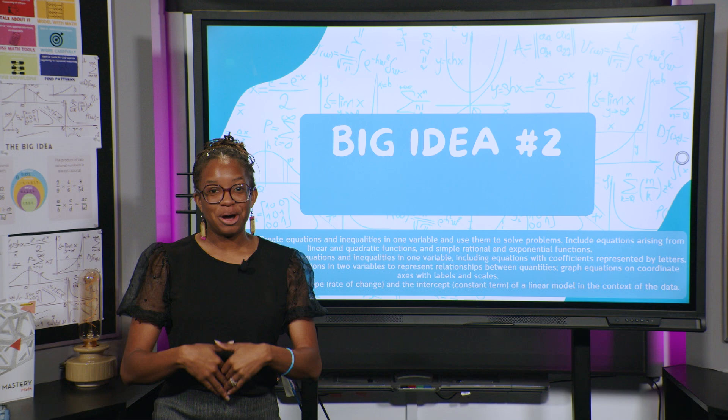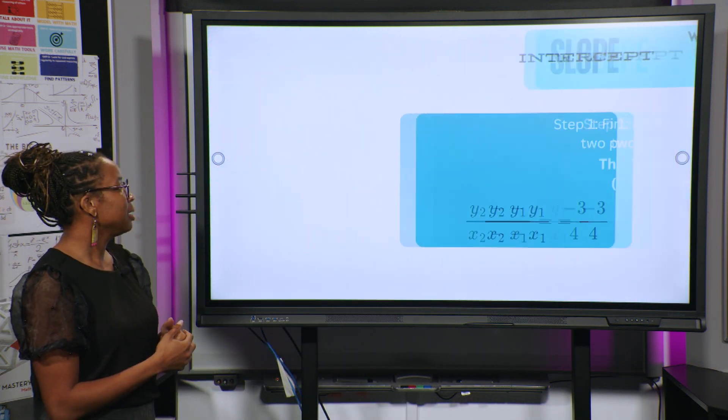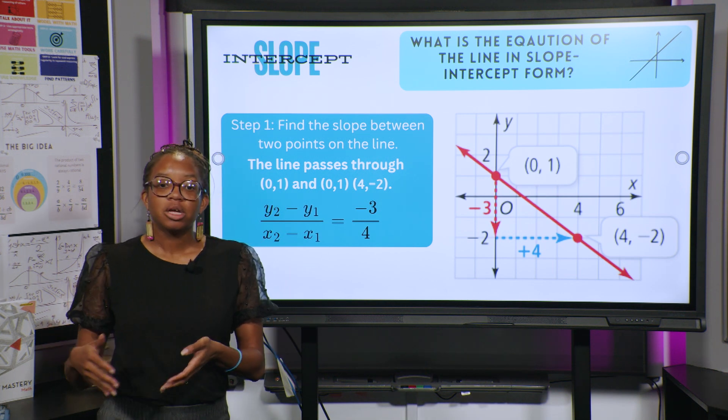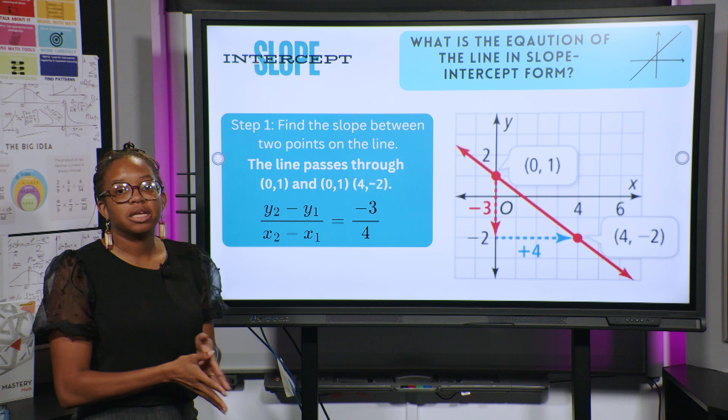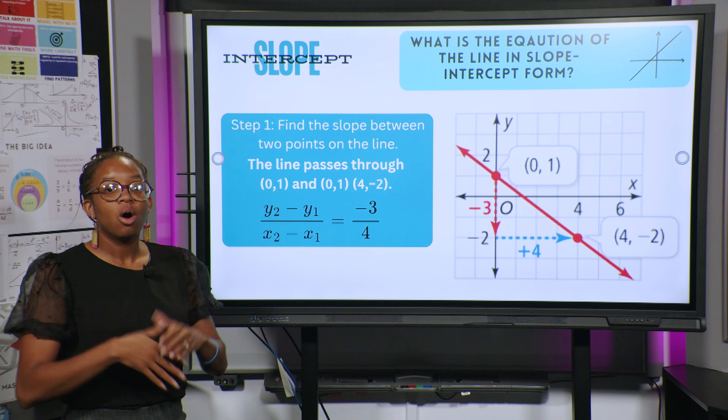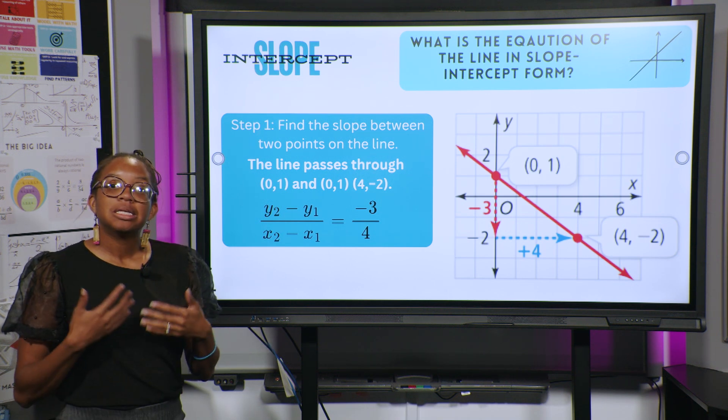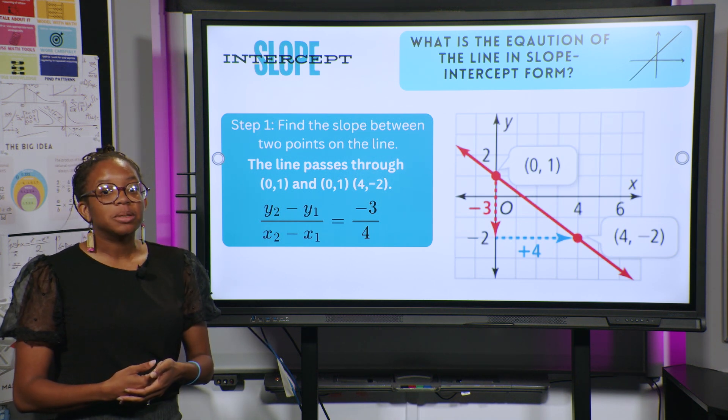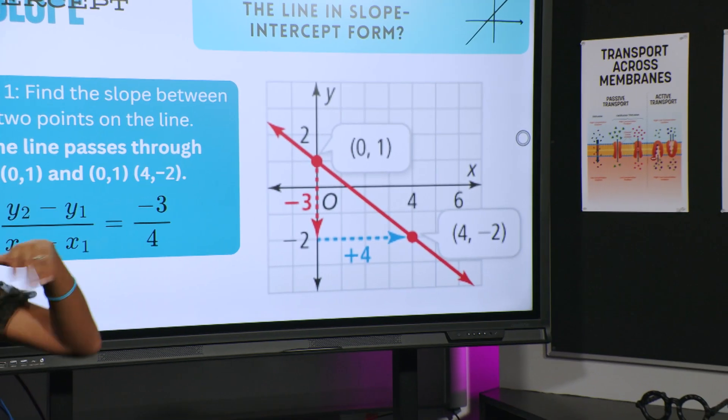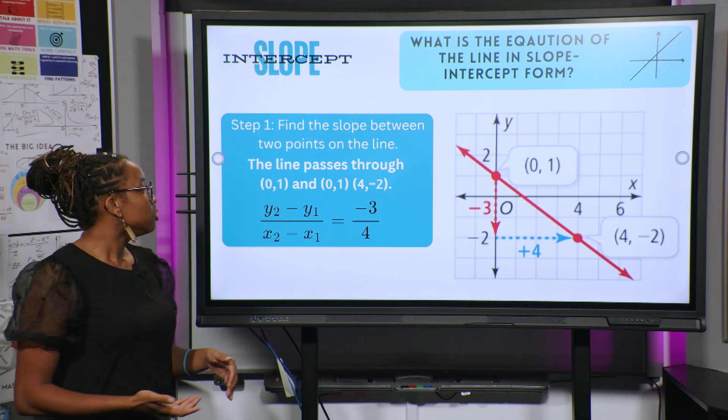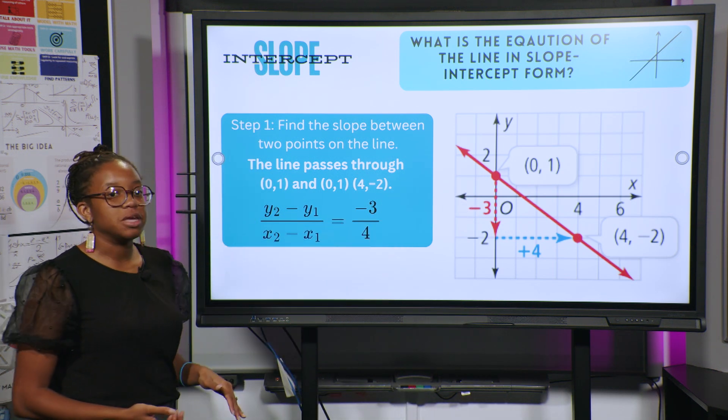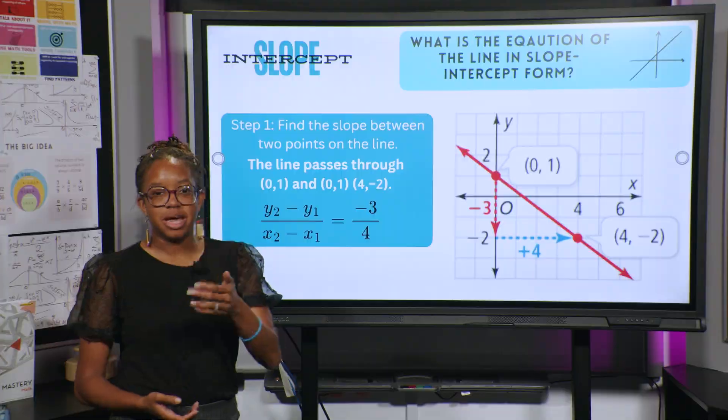Big idea number 2. What is the equation of the line in slope intercept form? So now we have been given a line, and so now we have to figure out what is that equation going to look like in slope intercept form? Well, here are some steps. Step one, find the slope between two points on the line. So find two points on that line and write out the ordered pairs for them. So for our first one, we have 0 comma 1. The other one that we have is 4 comma -2.